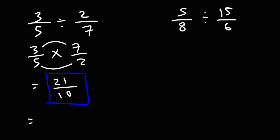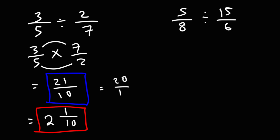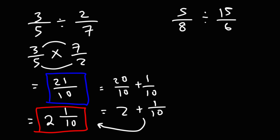If you want to convert it to a mixed number: how many times does 10 go into 21? 10 goes into 21 two times. 10 times 2 is 20, and 21 minus 20 is 1. So as a mixed number this is 2 and 1 tenths. You can also do it this way: 21 is 20 plus 1, and 20 divided by 10 is 2, so we have 2 plus 1 over 10, which is 2 and 1 tenths as a mixed number.